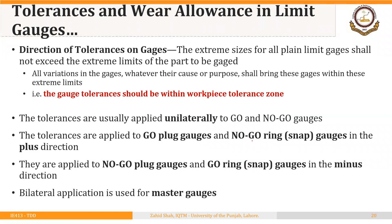The extreme sizes of all plain limit gauges shall not exceed the extreme limits of the work to be gauged. All variation in the gauges, whatever their cause, shall bring these gauges within these extreme limits. The conclusion is that gauge tolerances should be applied such that they are within the workpiece tolerance zone, and this is only possible using unilateral tolerances.